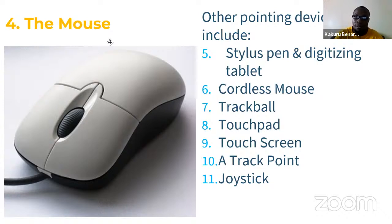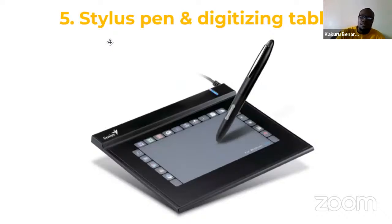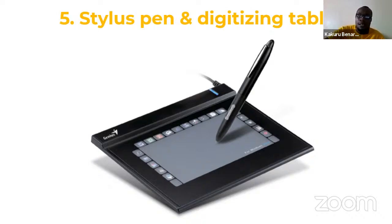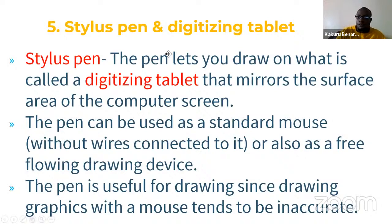Other pointing devices include a cordless mouse, trackball, touchpad, touch screen, track point, and joystick. First is the stylus pen and digitizing tablet. This device is attached to the system unit and you use the pen to write on the tablet surface — similar to signing your e-signature when getting a national ID. What you write there is transformed into electronic form and stored. A stylus pen lets you draw on a digitizing tablet that mirrors the surface area of the computer screen.